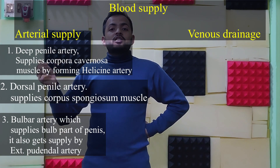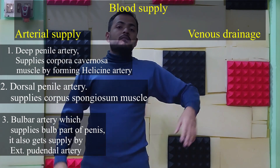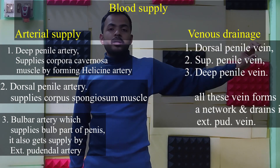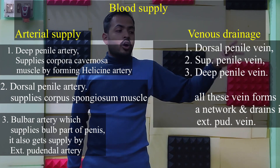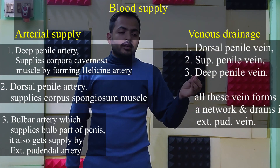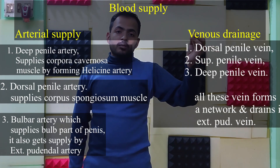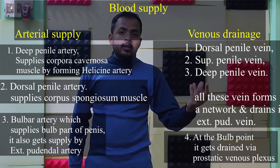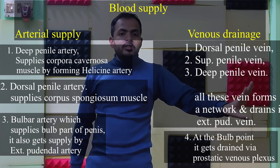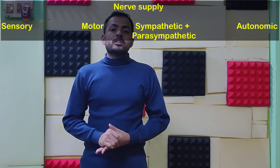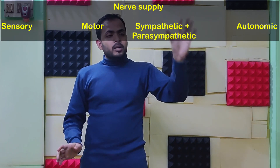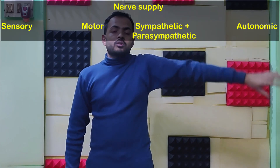In venous drainage, you will get the dorsal penile vein, deep penile vein, and superficial penile vein. All these veins form a venular network and drain into our external iliac vein. At the bulb point, it gets drained by the prostatic venous plexus. The nerve supply of our penis has mainly four types: sensory, motor, sympathetic, and parasympathetic, along with autonomic.